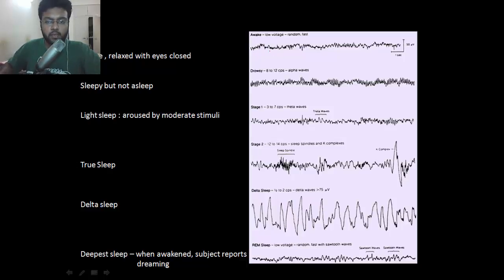Next is sleep physiology. Let's look at the normal EEG pattern of sleep. When the person is awake and relaxed with eyes closed, you'll find random waves.